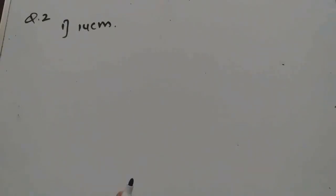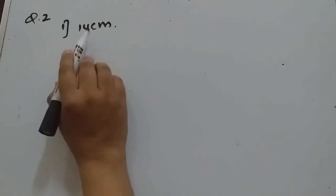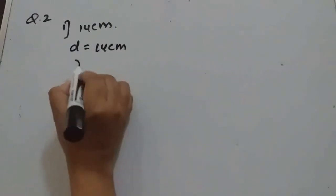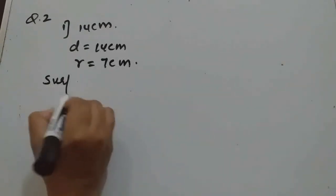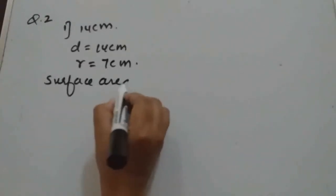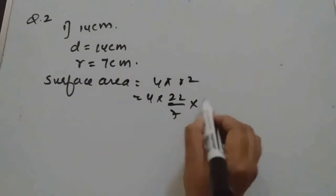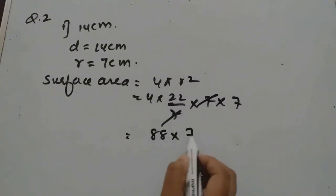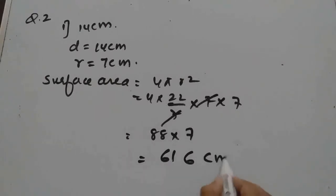Question 2: Find the surface area of a sphere of diameter 14 cm. Since diameter is given, we find radius = 14/2 = 7 cm. Then surface area = 4πr² = 4 × (22/7) × 7 × 7. So 88 × 7 gives 616 cm².